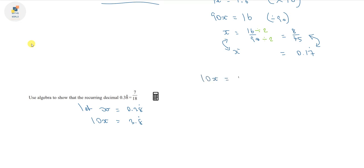10x equals 3.888 and so on. And x equals 0.3888 and so on. We subtract one from the other. We can see that all the 8s here cancel out. 3.8 take away 0.3. Well, 8 minus 3 is 5, 3 minus 0 is 3. 10x minus x is 9x. So we know that 9x equals 3.5. And again, we're only interested in whole numbers, so we want to times both sides by 10. So 90x is equal to 35.